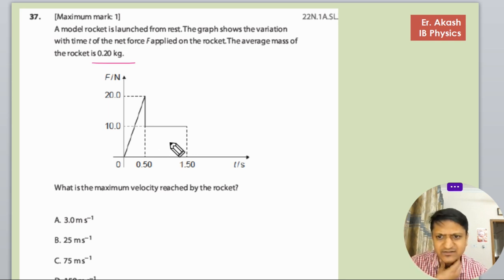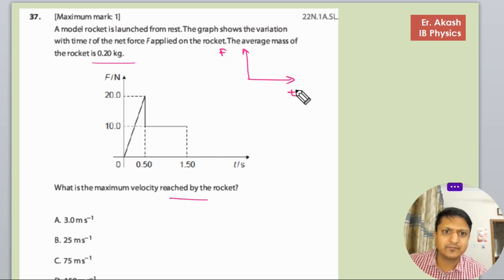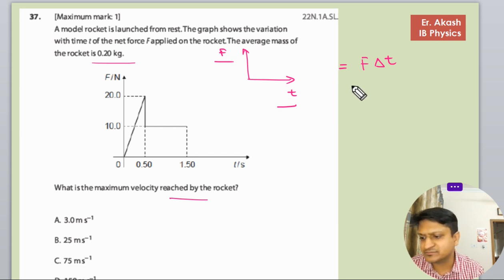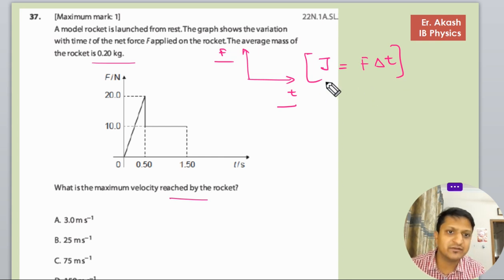First of all, understand what is the maximum velocity reached by the rocket. We have given the graph of F t, and F delta t means momentum, that is impulse. So the change in momentum is impulse.